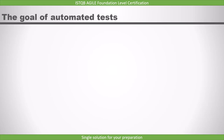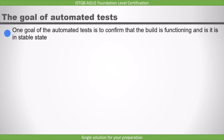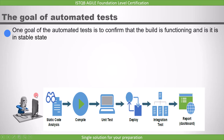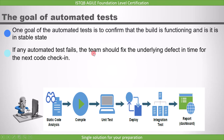Let's see the goal of automated tests. One goal of the automated tests is to confirm that the build is functioning and it is in a stable state. Once the code is developed, we perform static analysis on it, then the code is compiled and the build is successful — we can say that the code is stable. All these steps are automated. If any automated test fails, the team should fix the underlying defect in time for the next code check-in.